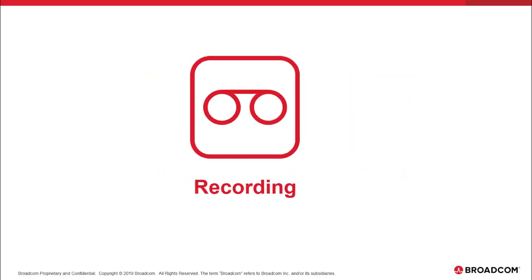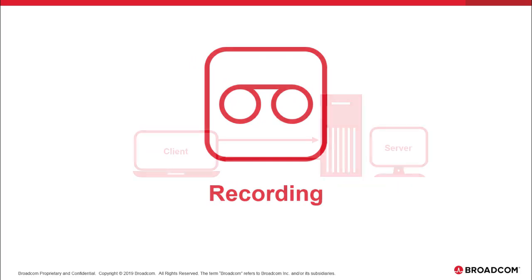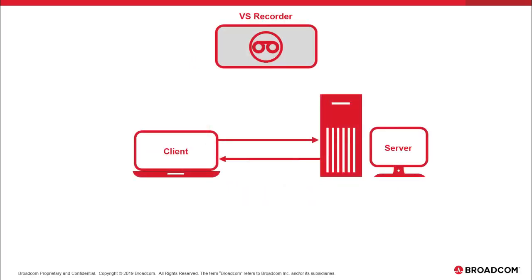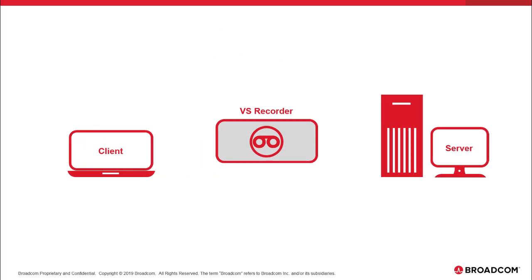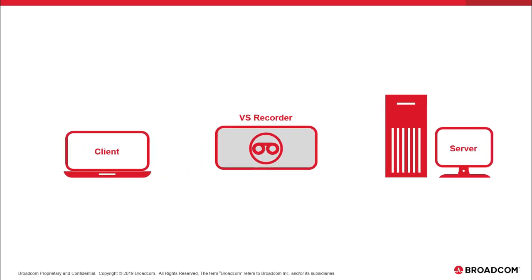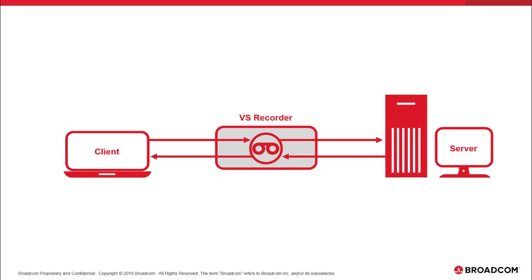When you create a virtual service from a recording, you're going to place a recorder in the middle of the transactions between the client and the server to capture those transactions that are passing back and forth. The client is configured to send requests to the recorder instead of the live service, and the recorder is configured to capture those requests and then send them on to the server. The server then sends the response back to the recorder, that response is captured and sent back to the client. And once this traffic is recorded, the virtual service can now take the place of the live system.